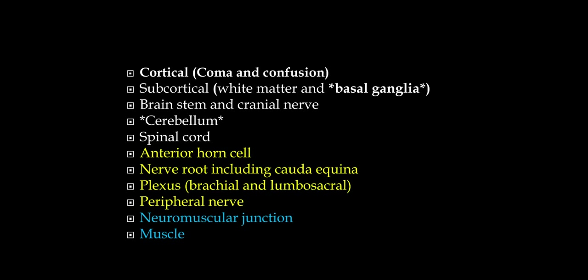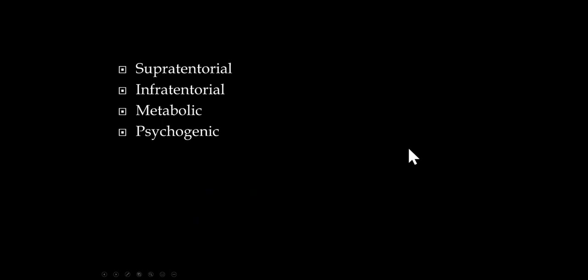There's some overlap here, but coma fits well in a cortical category. The four major categories of coma we want to divide patients into are supratentorial, infratentorial, metabolic, and psychogenic.